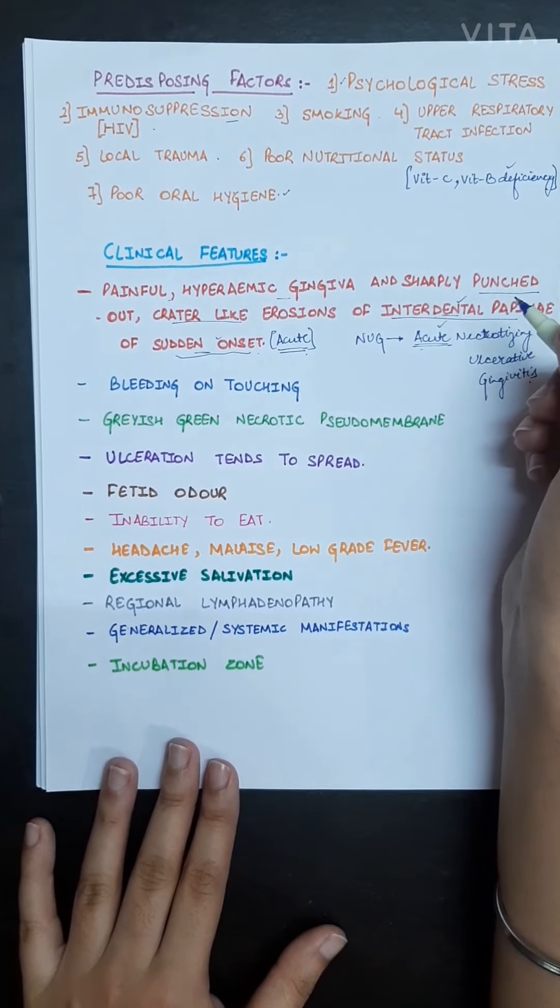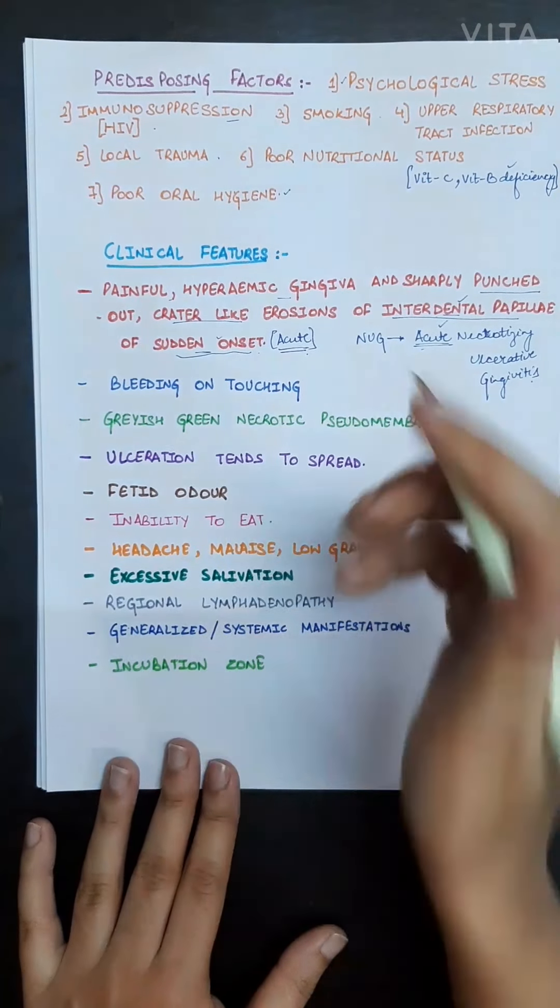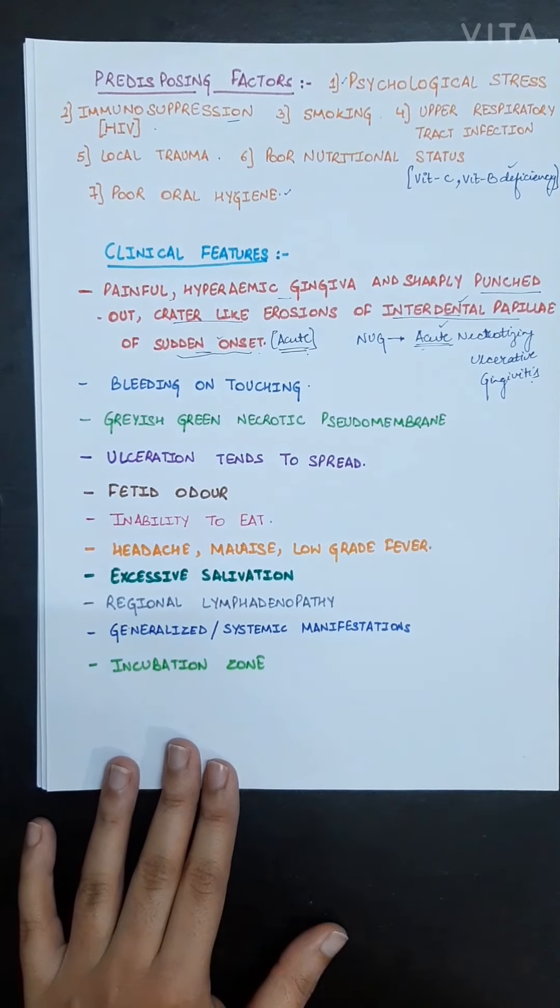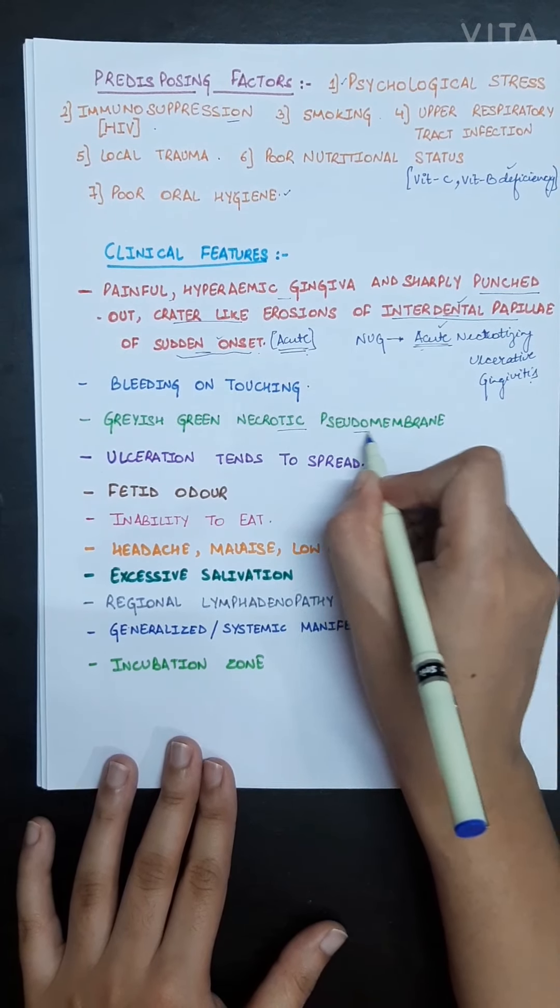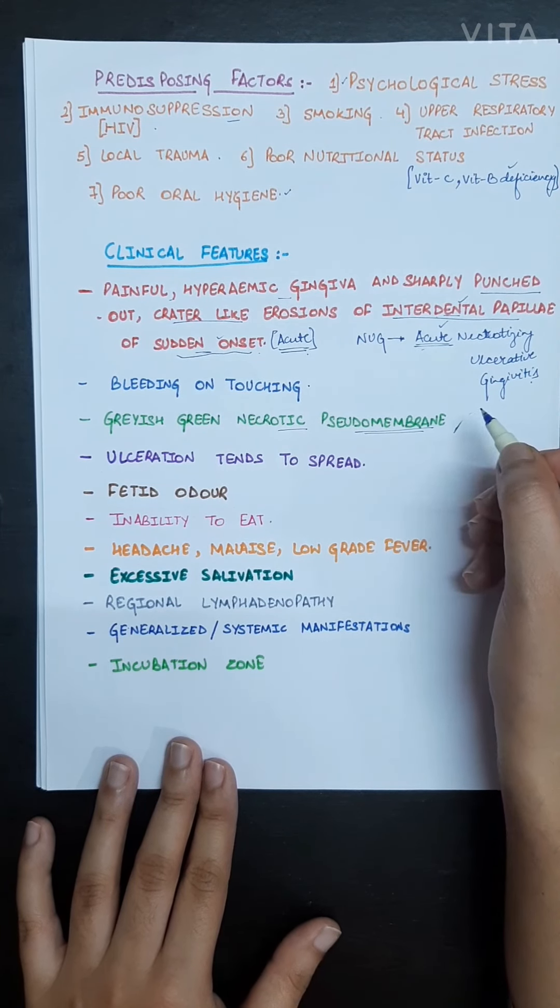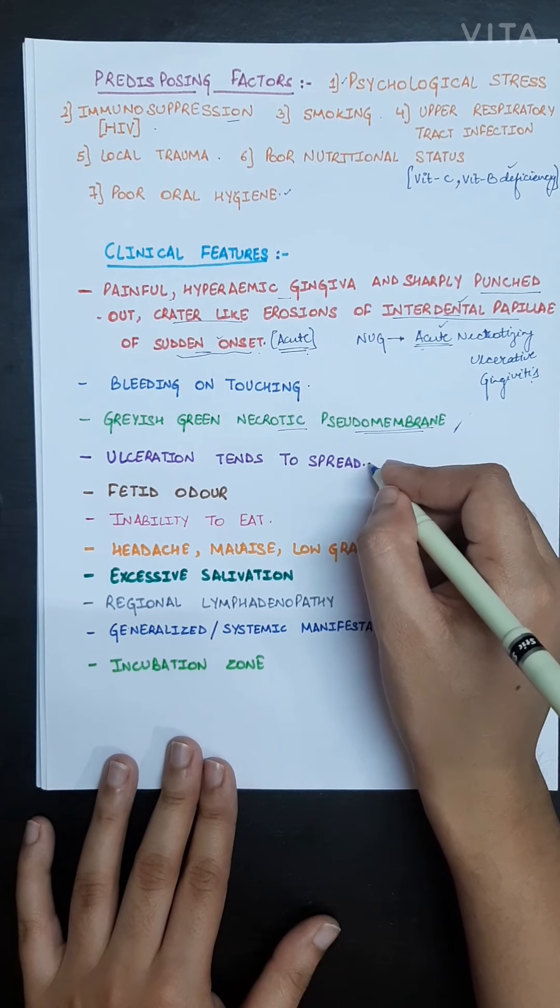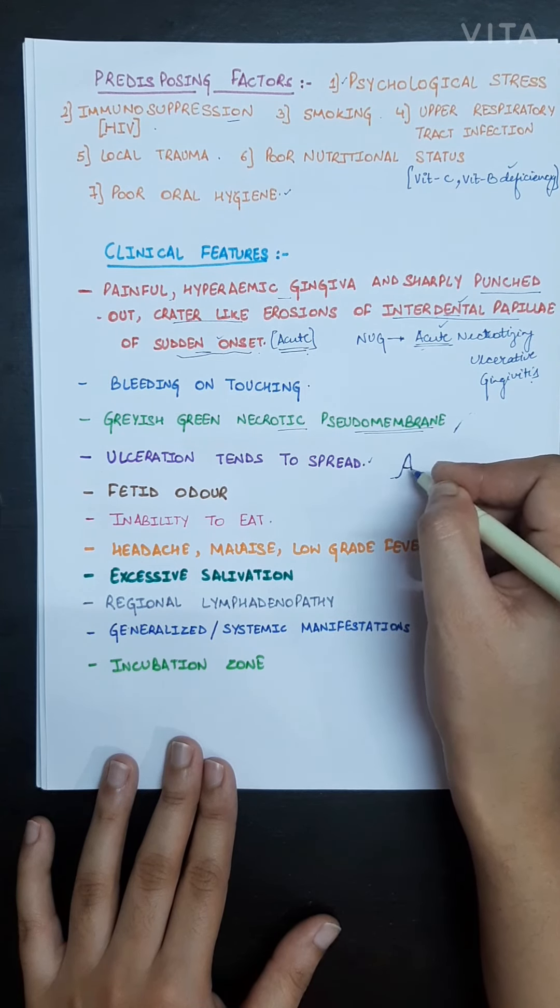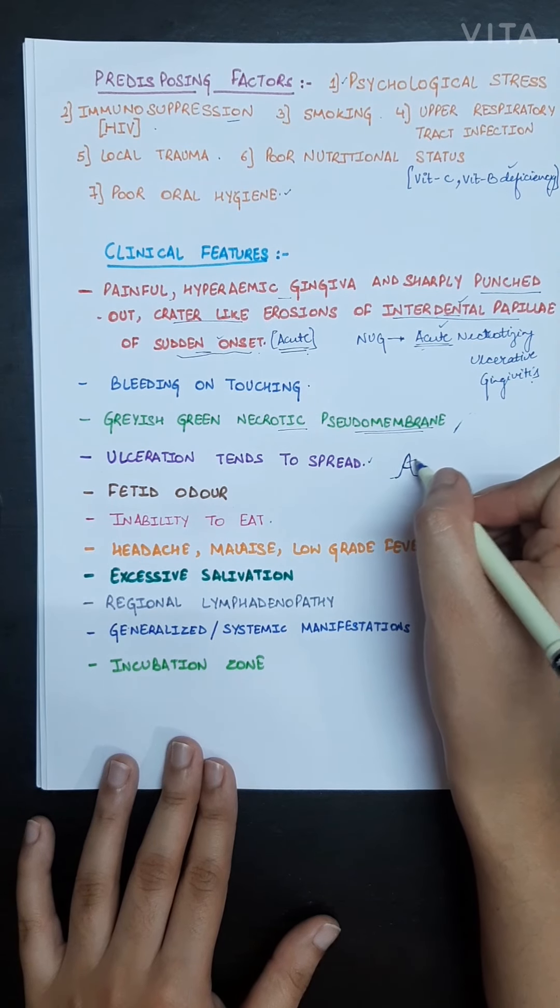Now the patient will suffer from bleeding on touching the gingiva. The grayish green necrotic pseudomembrane will be present on that affected area. This ulceration tends to spread around all the gingiva.